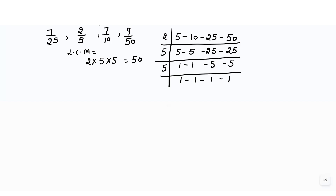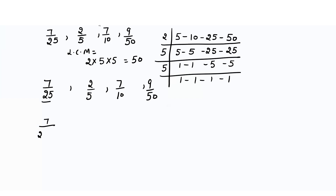Writing the original fractions: 7/25, 2/5, 7/10, 9/50. Since 25 × 2 = 50, multiply 7 by 2. Since 5 × 10 = 50, multiply 2 by 10. Since 10 × 5 = 50, multiply 7 by 5.